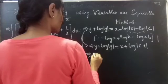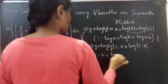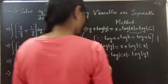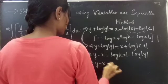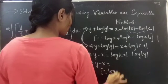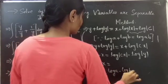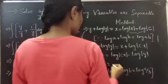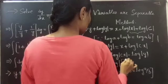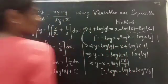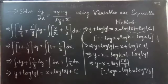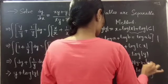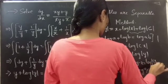Now take the x terms to the LHS and log|y| to the RHS. You get y − x = log|cx| − log|y|. Using log a − log b = log(a/b), you can write this as y − x = log|cx/y|. So this completes the problem: y − x = log(cx/y).